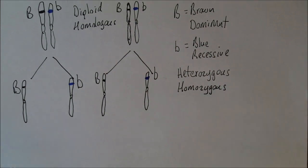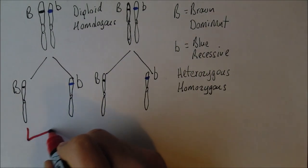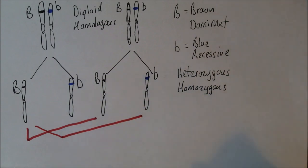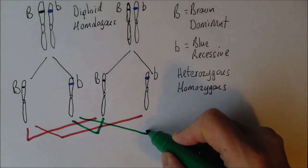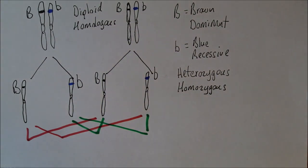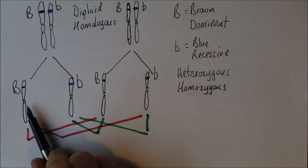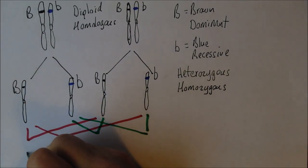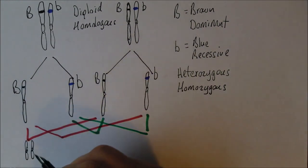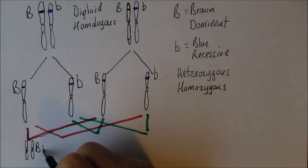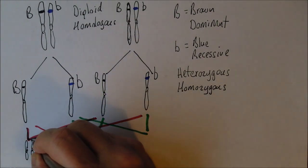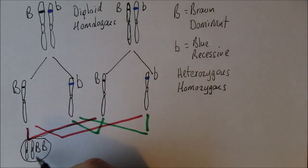These gametes can pair up in various ways. That one could pair with that one, or that one could pair with that one — or alternatively, that one could pair with that one, or that one with that one. In one case, those two chromosomes both become present in the zygote. You're going to get a big B from one and another big B from the other, so the child that develops from this zygote is big B, big B — they have two copies of the dominant gene.